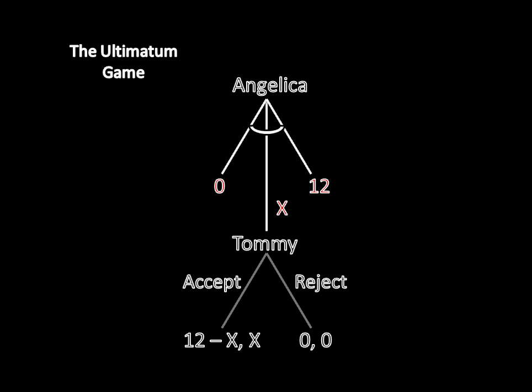Let's note a couple of things here. First, you might be wondering what that curly line underneath Angelica means. Well, the 0 on the left represents the smallest number she can choose. The 12 on the right represents the largest number she can choose. And the arc in between the two choices represents the fact that this is a range of choices, so she can choose any value between 0 and 12. And the x is our shorthand for what that offer actually ends up being.